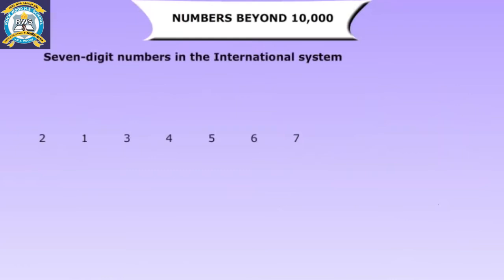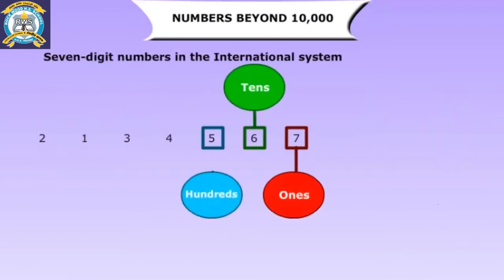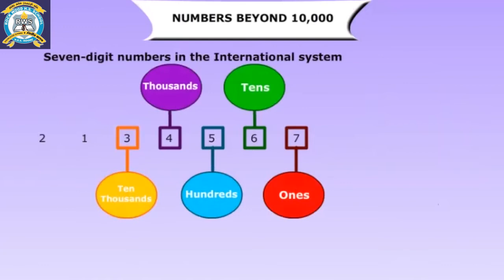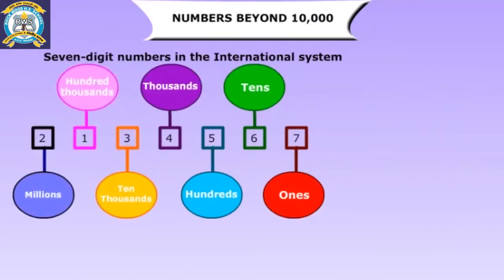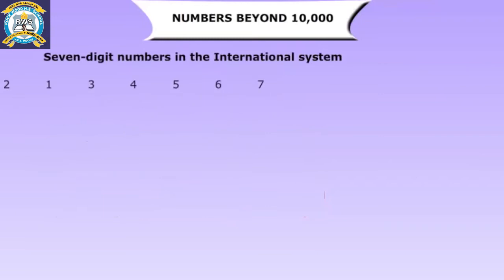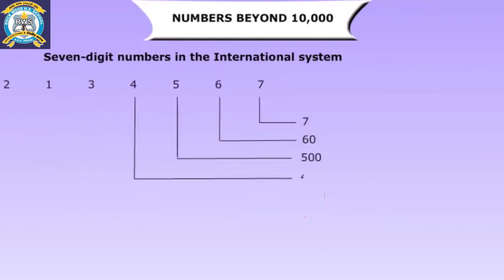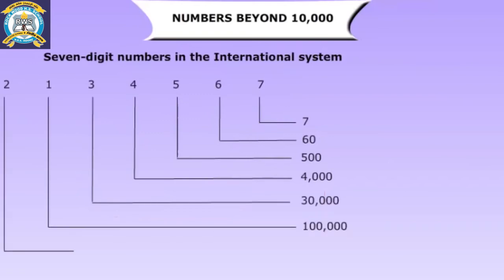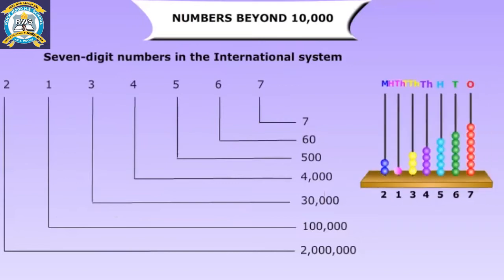The next higher place value in the international system is the millions place. Ten hundred thousands is equal to one million. The place values are ones, tens, hundreds, thousands, ten thousands, hundred thousands, and millions. For example: seven ones, sixty tens, five hundreds, four thousands, thirty thousand, one hundred thousand, two million. The number is represented on the abacus as shown.